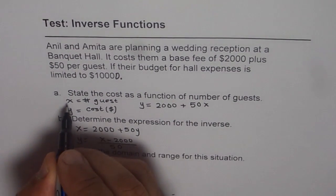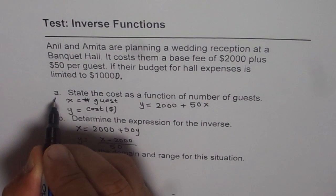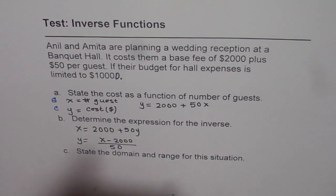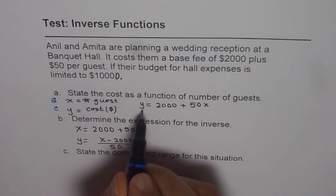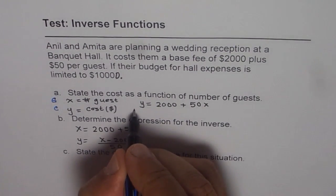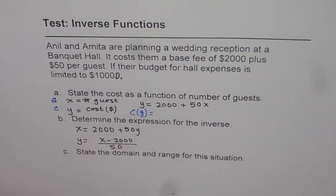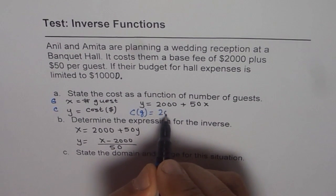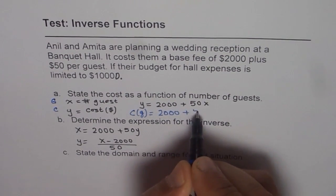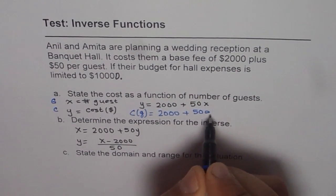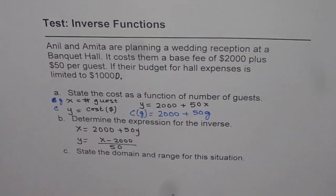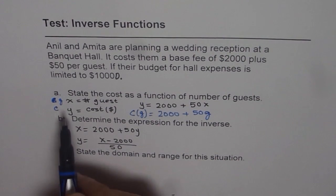In that case, when we say y equals 2000 plus 50g, if I replace c for cost and g for guest, so now we know that the cost is a function of guest. That's an alternate way. You could have said that let g be the guest and c be the cost.